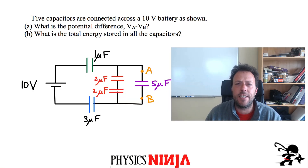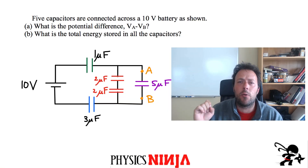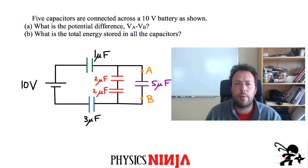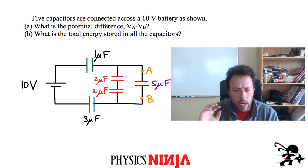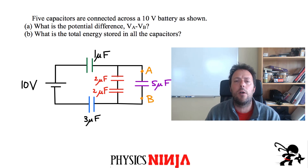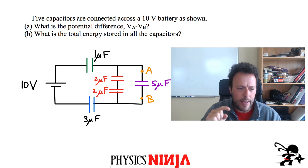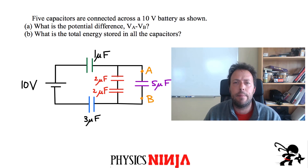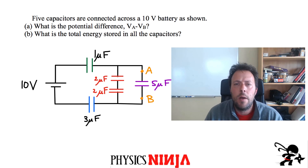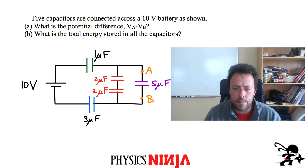Hi everybody, Physics Ninja here. Today we're going to look at a capacitor problem. I have a complex network of capacitors with different values — five of them in total. They're connected to a battery that has a potential difference of 10 volts, and I have a couple of questions related to the circuit.